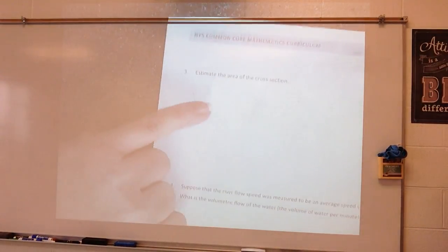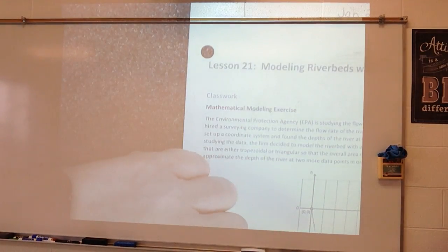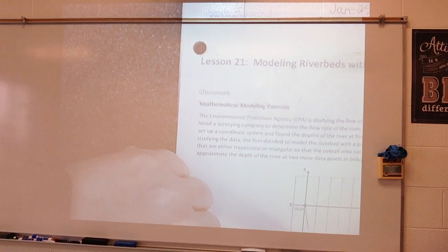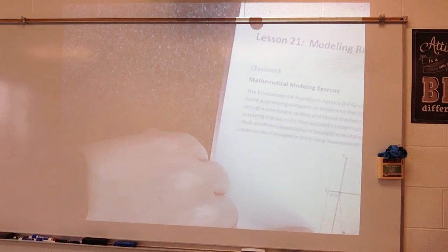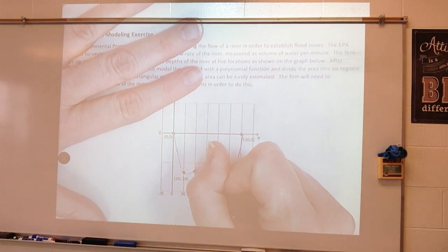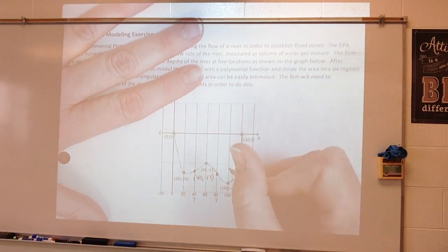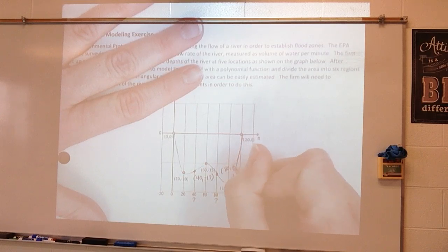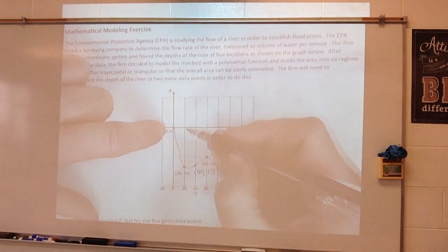Now, it says estimate the area of the cross sections. Alright, so yesterday, or I'm sorry, last week, we talked about we could create triangles and trapezoids. So now we know that this point is 40, negative 17 and we know that this point is 80, negative 21. So now let's look at this.